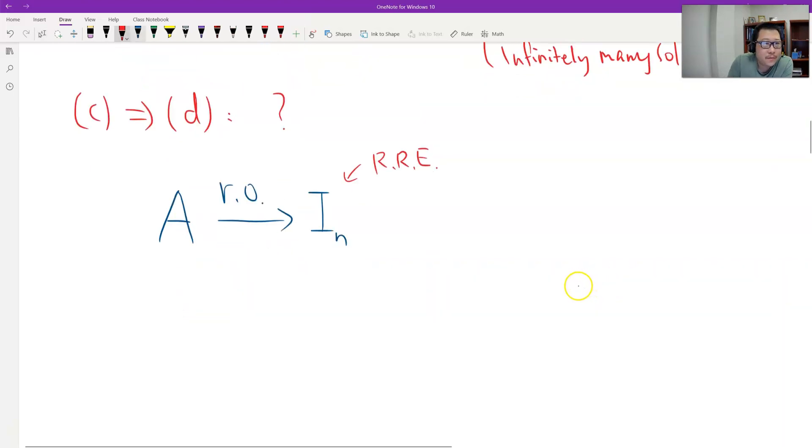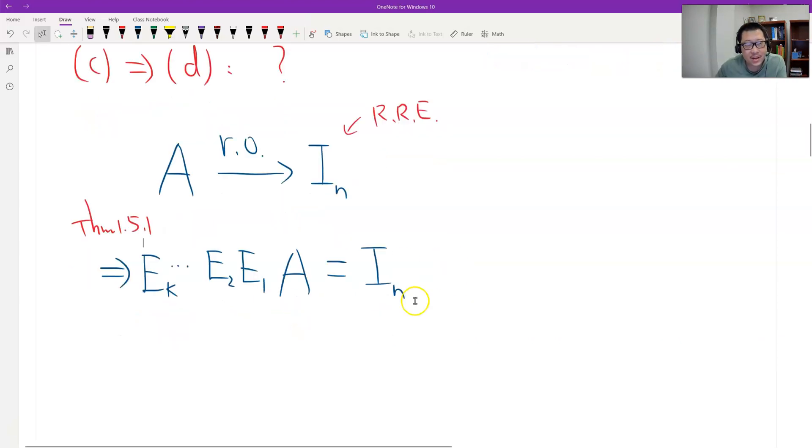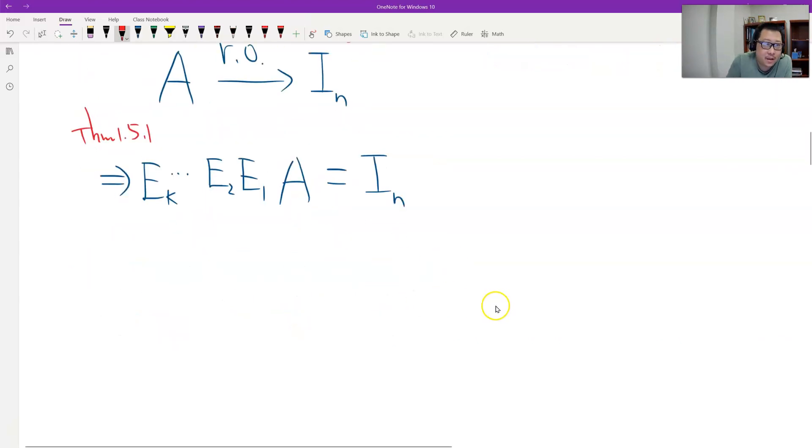This means A times a sequence like E1, E2, and so on, go to the last, let me say K, should be equals I identity. This is theorem 1.5.1, because each row operation is a matrix multiplication. And from here it's good, I can get a discrete expression of A, because each elementary is invertible.